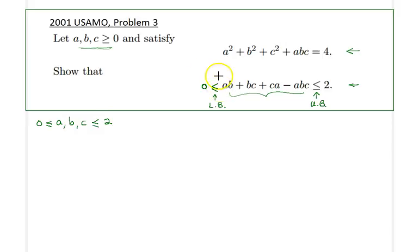Going back to the question, let's start with the lower bound, which is pretty easy to prove. So what I would like to show is our expression here: ab + bc + ca - abc is greater than or equal to 0.